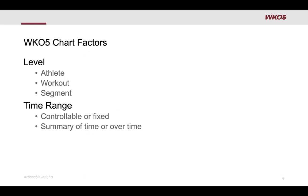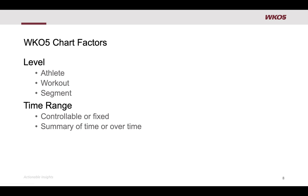One thing to think about when building charts is a couple of WKO 5 chart factors. The first is level — you have the athlete level, workout, and segment. Some charts are very specific to the athlete, meaning you're looking at the cumulative athlete data, the big picture — how is their training over time? Versus a workout or a segment, where you're looking at a very specific point, reviewing a specific workout. And then you have how time ranges affect the chart — deciding whether you're looking at a controlled or a fixed timeframe, and how it treats time: do you want a summary or do you want it over time?